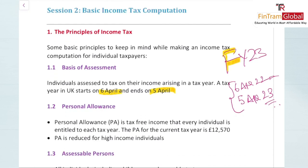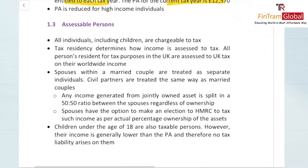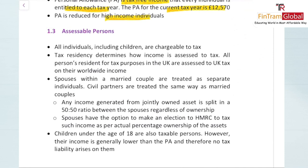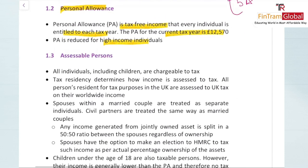Personal allowance is tax-free income given to individuals in the UK every year. It is renewed every year and reduces their overall tax liability. It is a benefit given by the government for individuals to save tax and encourage savings. The personal allowance for the current year is £12,570. We will also learn how personal allowance is deducted for high-income individuals.